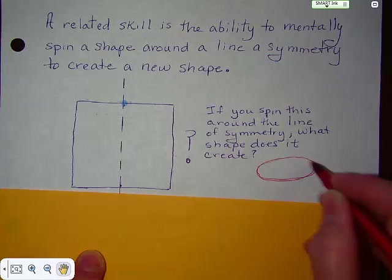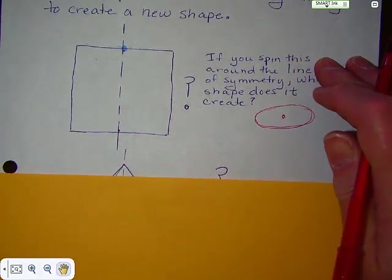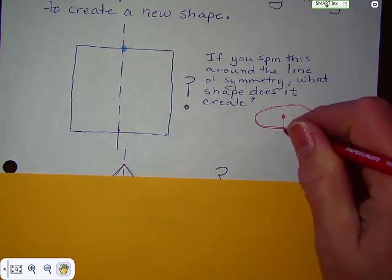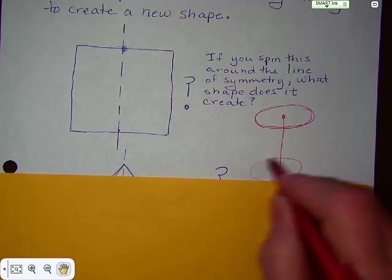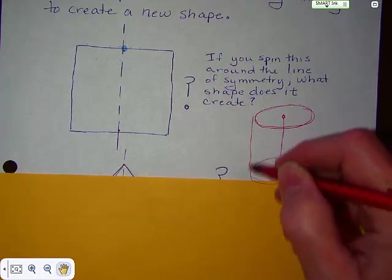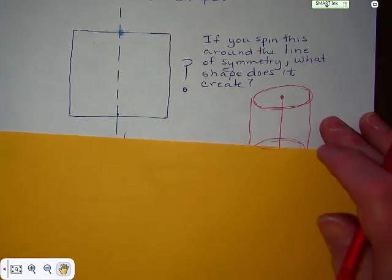Spinning it around implies that it is going to have a circular top. So, you're spinning and you're spinning. And here's your circle, and that's your center. And you're spinning it around this line of symmetry. And you're spinning and you're spinning. And you are creating a cylinder.